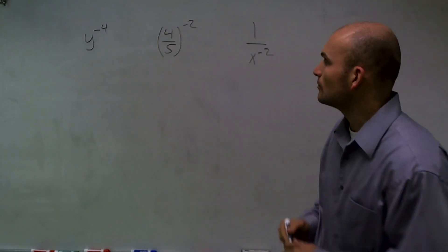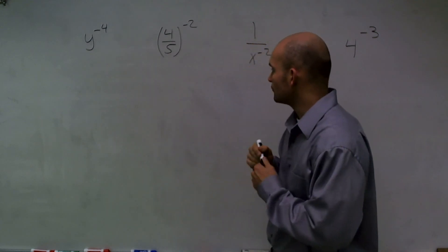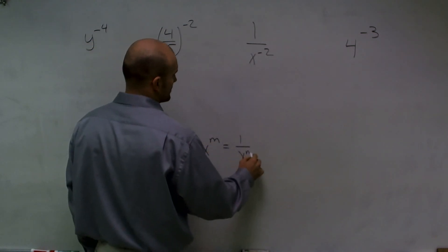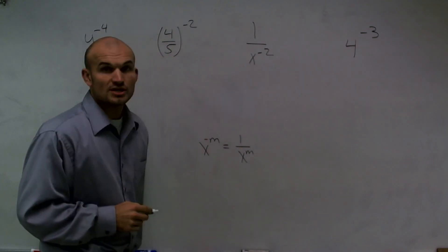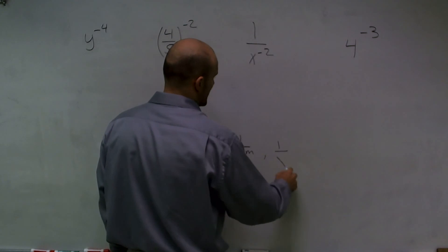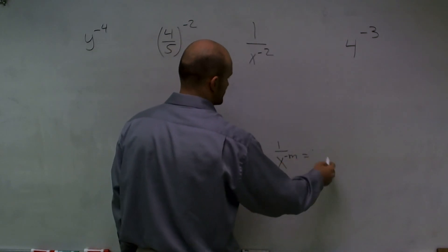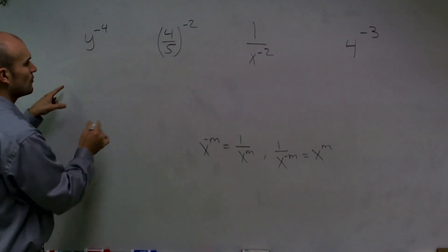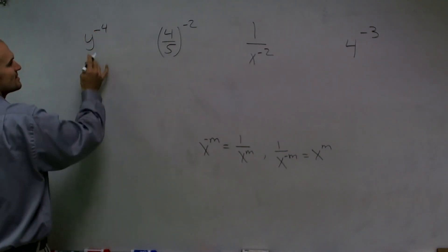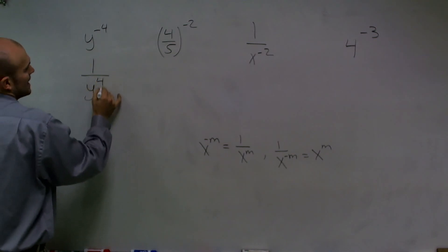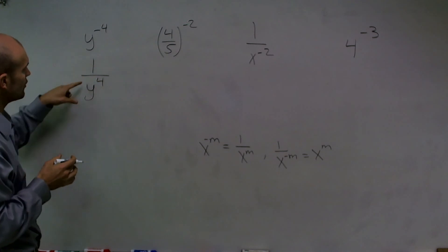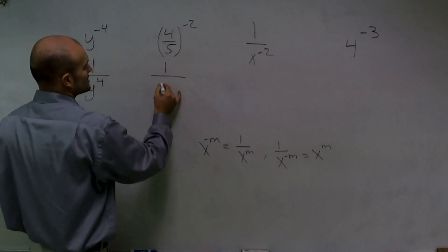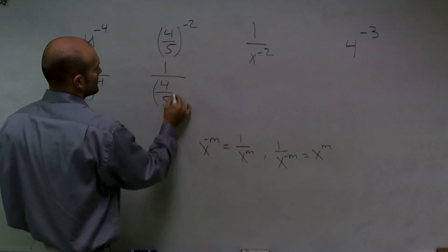For the first problem, remember the rule: x to the negative m equals 1 over x to the m, and also 1 over x to the negative m equals x to the m. For y to the negative fourth, I just write this as a positive exponent in the denominator — the answer is 1 over y to the fourth. For the next problem, following the same steps, we'd write 1 over four-fifths squared.